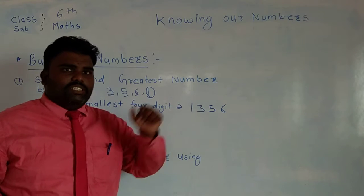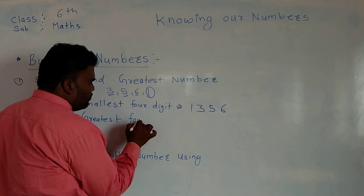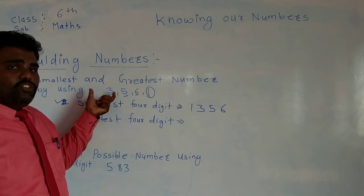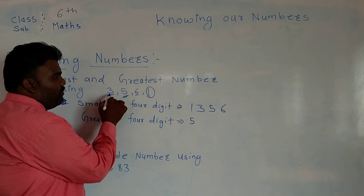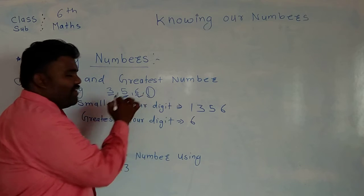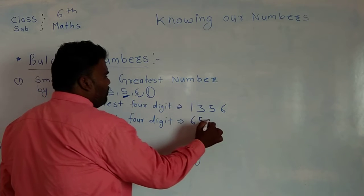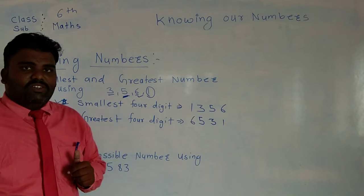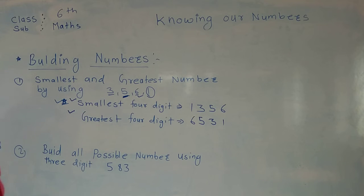This is the smallest four-digit number. Next, we will talk about the greatest four-digit number. How do we find the greatest four-digit number using these four digits? First, we find the greatest digit. Which one is the greatest? Six — because six is greater than five. So I write six first, then five, then three, then one. This gives the greatest four-digit number. So this is how we find both the smallest and the greatest four-digit number.